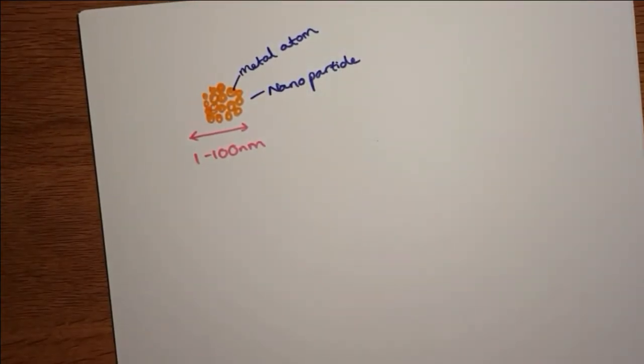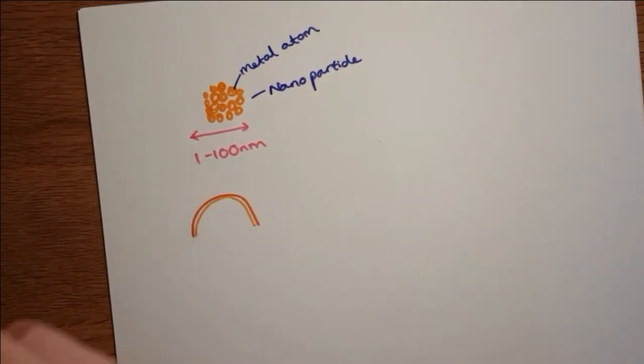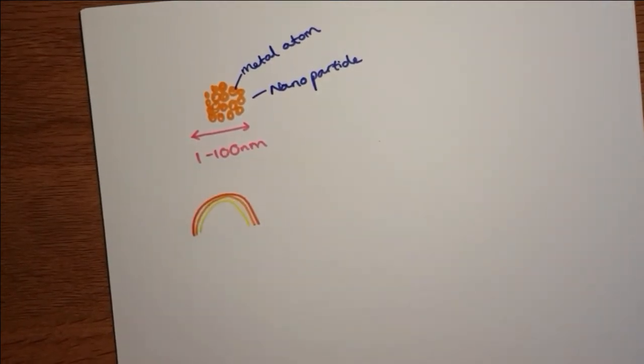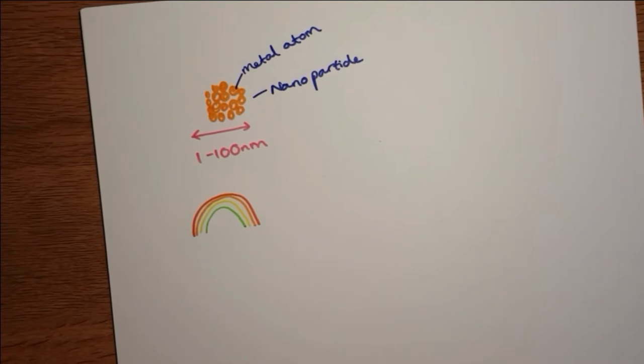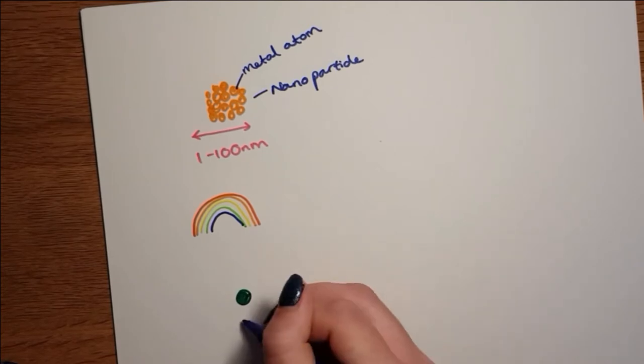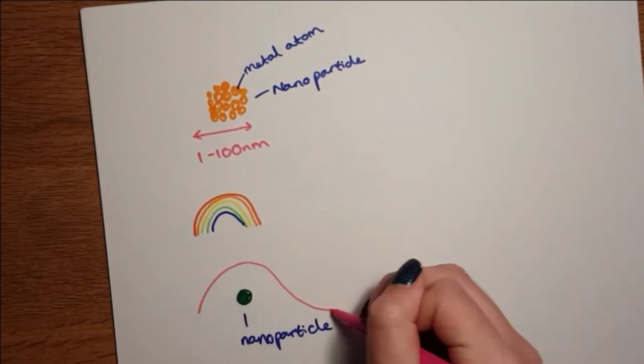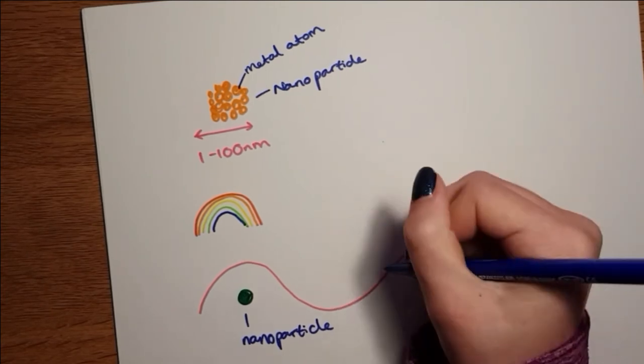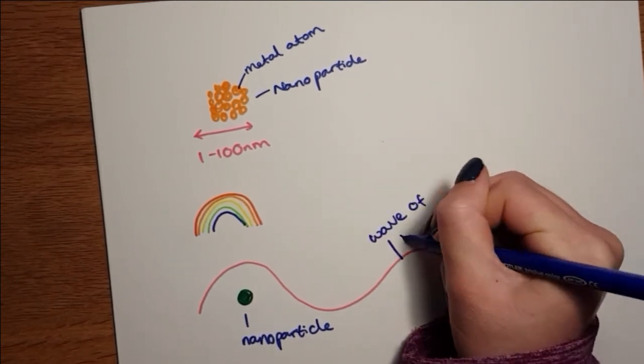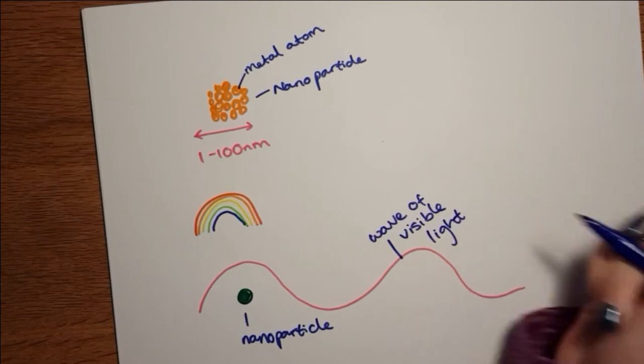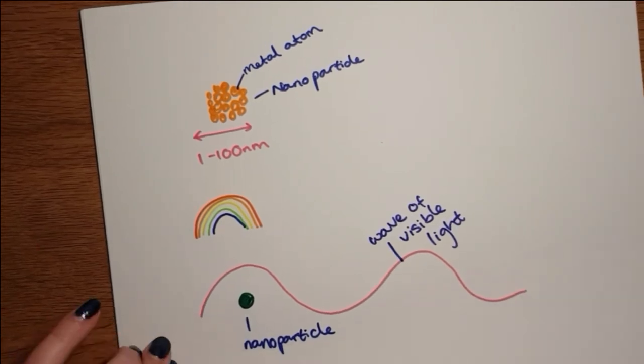One of these properties is the vibrant color of nanoparticles in solution. A phenomenon known as localized surface plasmon resonance or LSPR is responsible for these colors. LSPR occurs because the nanoparticles have a smaller diameter than the wavelength of visible light. This means that they have different interaction with visible light than their bulk materials do.